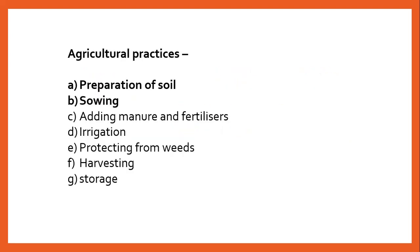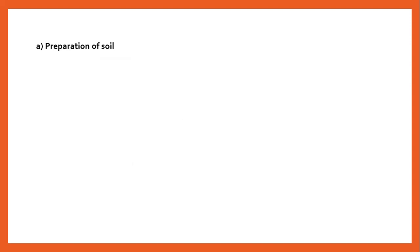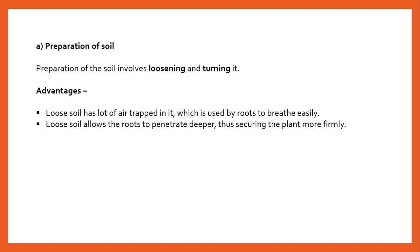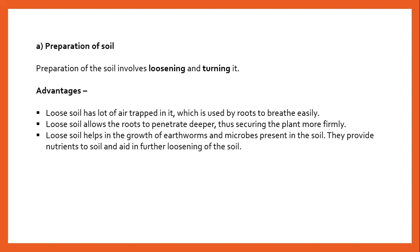Here we will discuss about preparation of soil and sowing. First is the preparation of soil, which involves loosening and turning it. The advantages: loose soil has air trapped inside it so that roots can breathe easily. Loose soil allows the roots to go deeper, thus the plant fixes the soil firmly. Loose soil helps in the growth of earthworms and microbes, ensuring the nutrients of the soil.